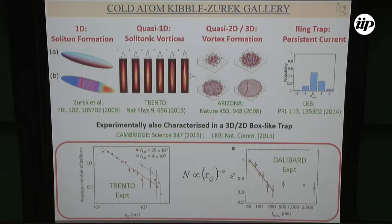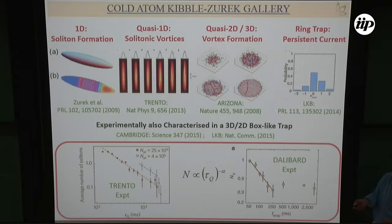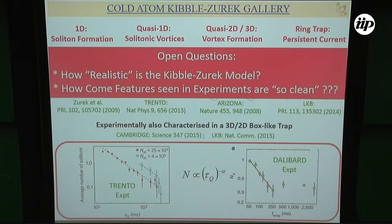The quasi-1D study Gabriele mentioned enters the regime of Kibble-Zurek physics — dynamically breaking symmetry and seeing how the system forms. What was found in Trento and also in Paris is that there seems to be a power law decay for the number of defects as a function of quench rate, consistent with Kibble-Zurek. But here's the problem: how realistic is Kibble-Zurek? And why are the features in these experiments so clean, given that defects were counted long after the transition?